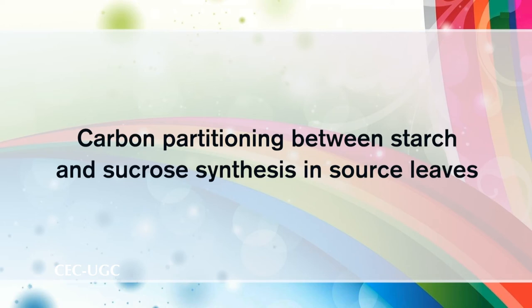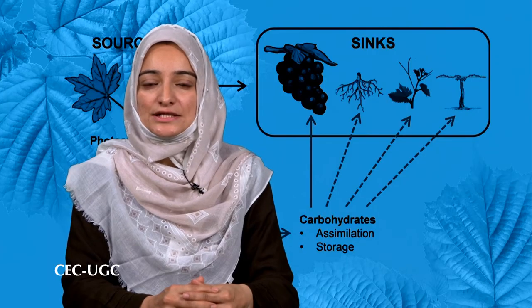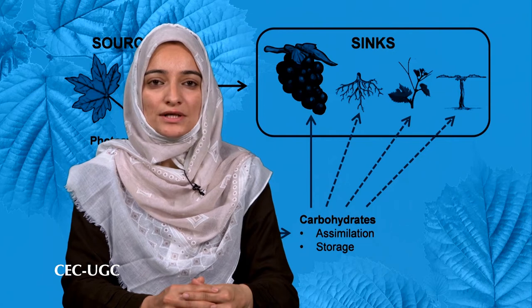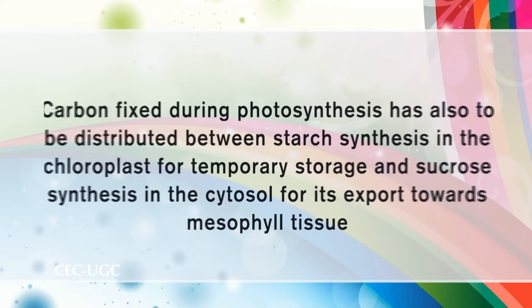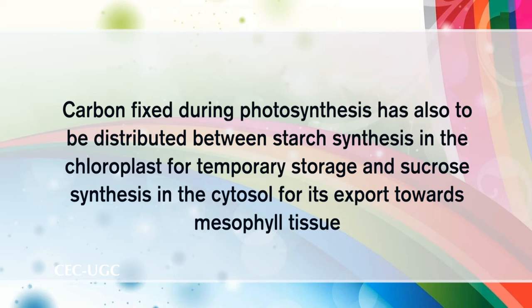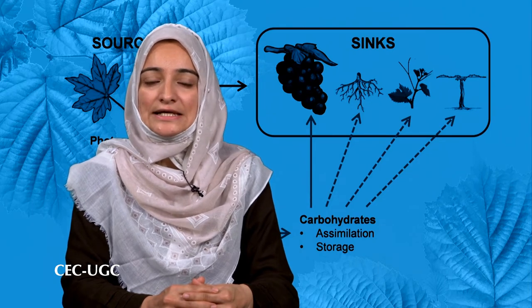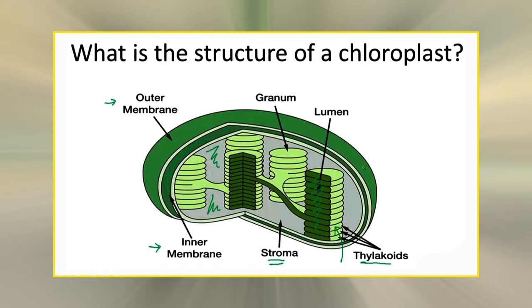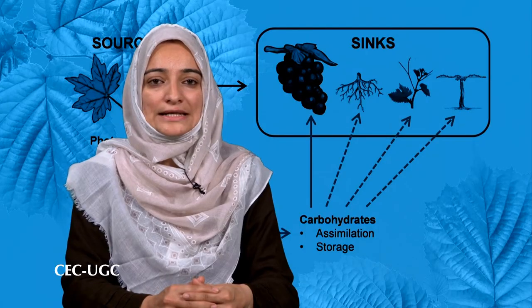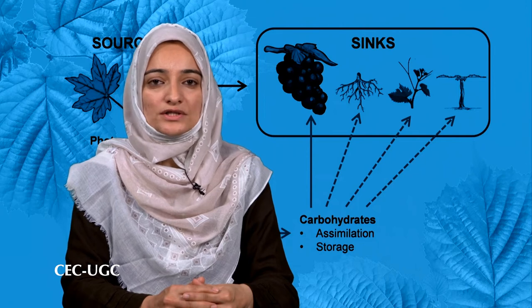Let us try to understand carbon partitioning between starch and sucrose synthesis in source leaves. In addition to assimilate allocation between source and sink organs, carbon fixed during photosynthesis must also be distributed between starch synthesis in the chloroplast for temporary storage and sucrose synthesis in the cytosol for export towards mesophyll tissue. During photosynthesis, triose phosphates manufactured in the chloroplast may either be shipped by the inner chloroplast membrane triose phosphate translocator into the cytosol for sucrose synthesis, or retained within the chloroplast and used for starch synthesis.